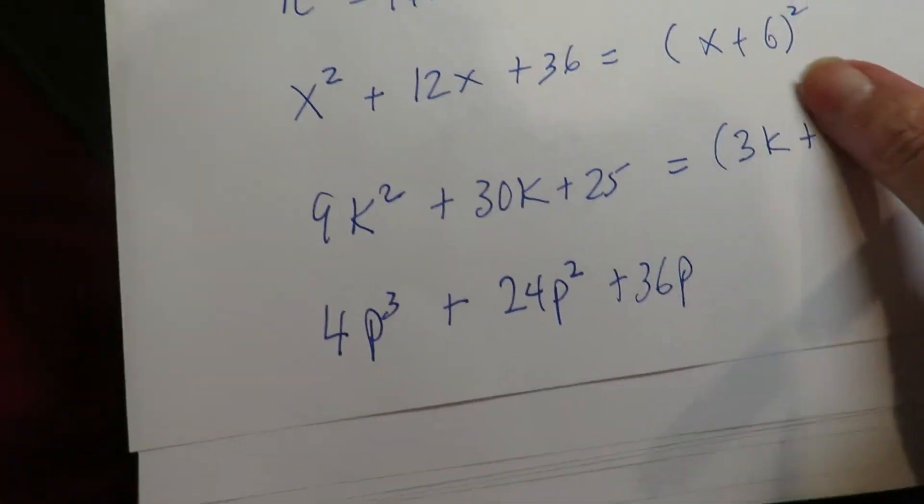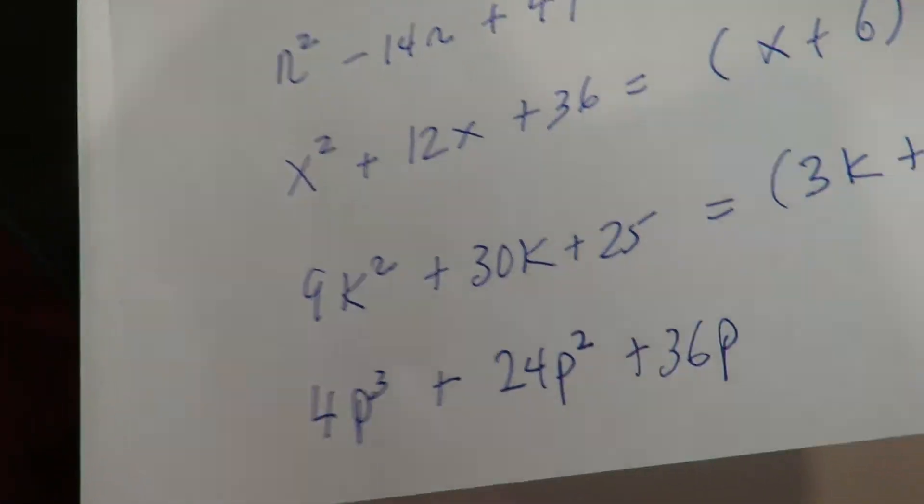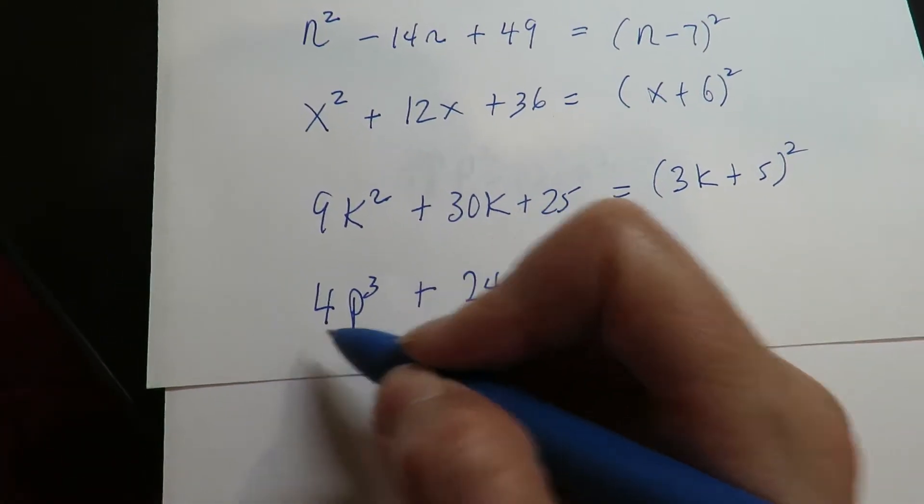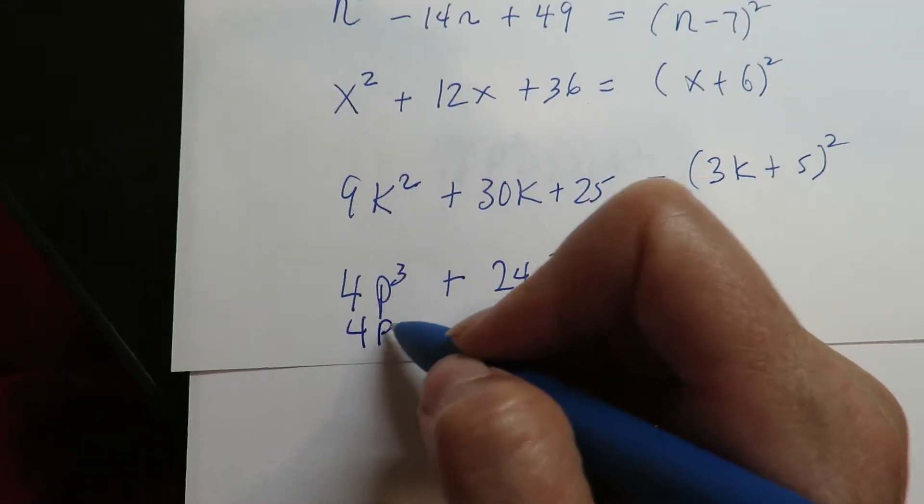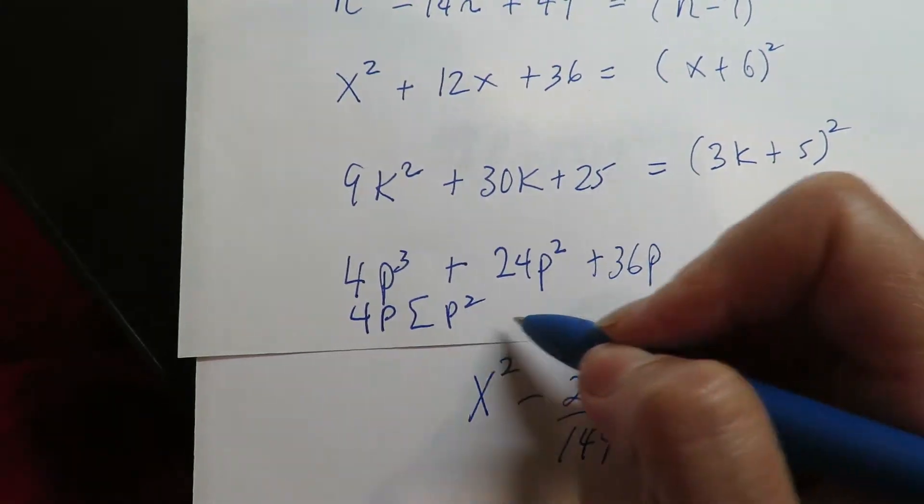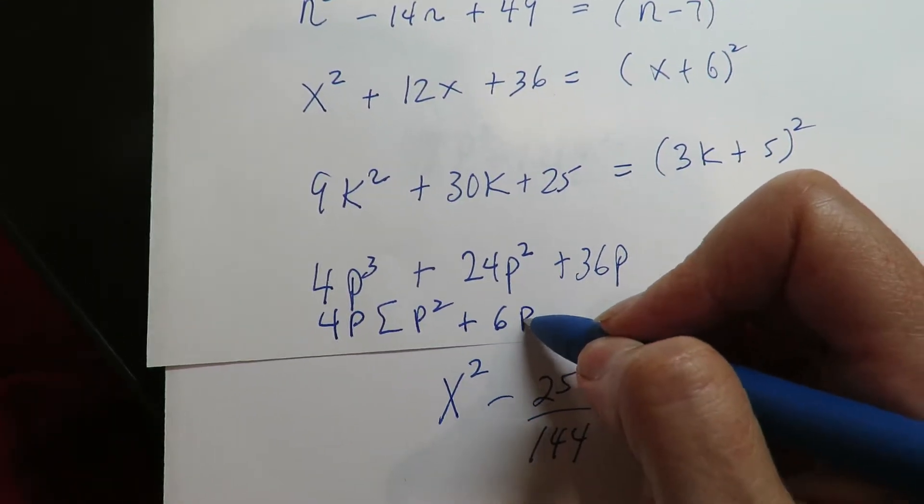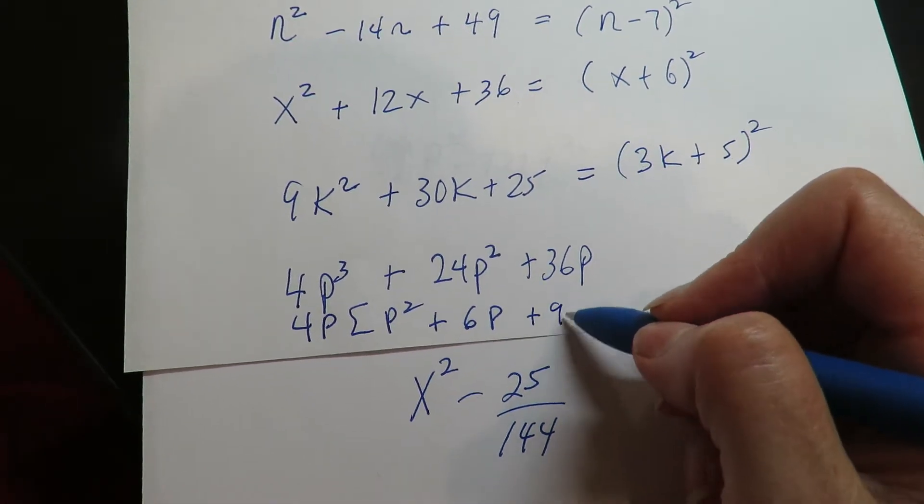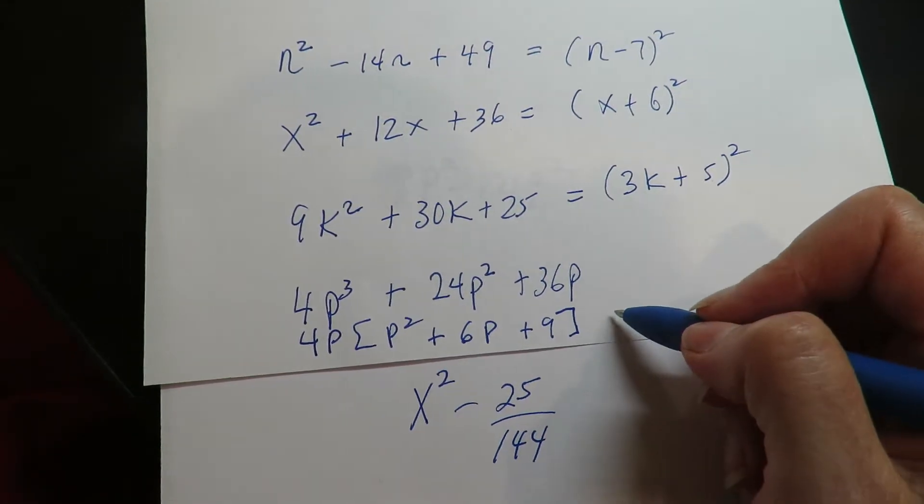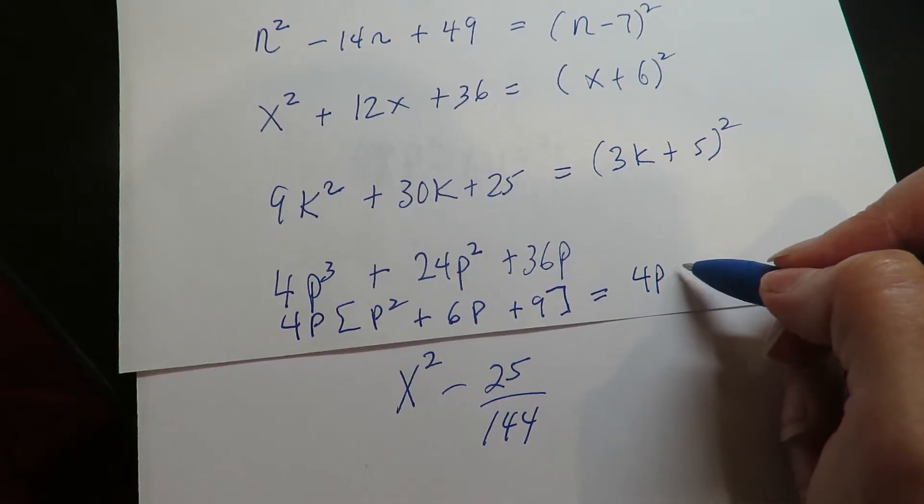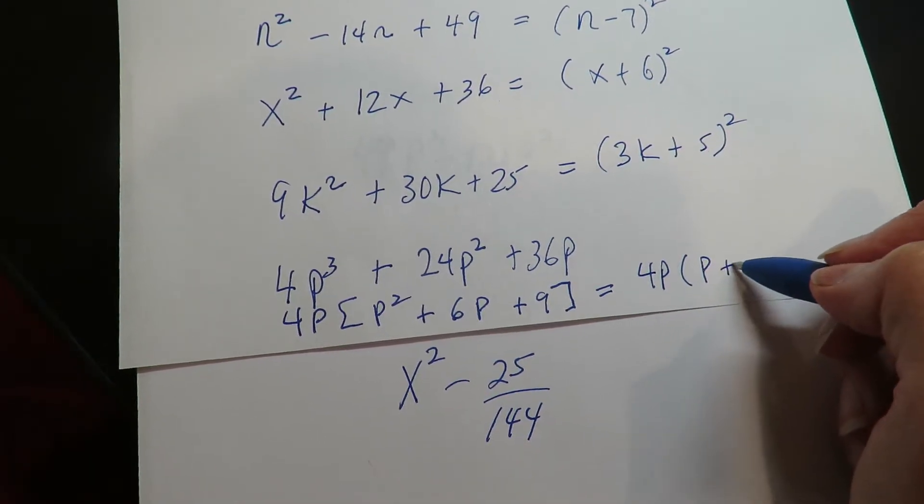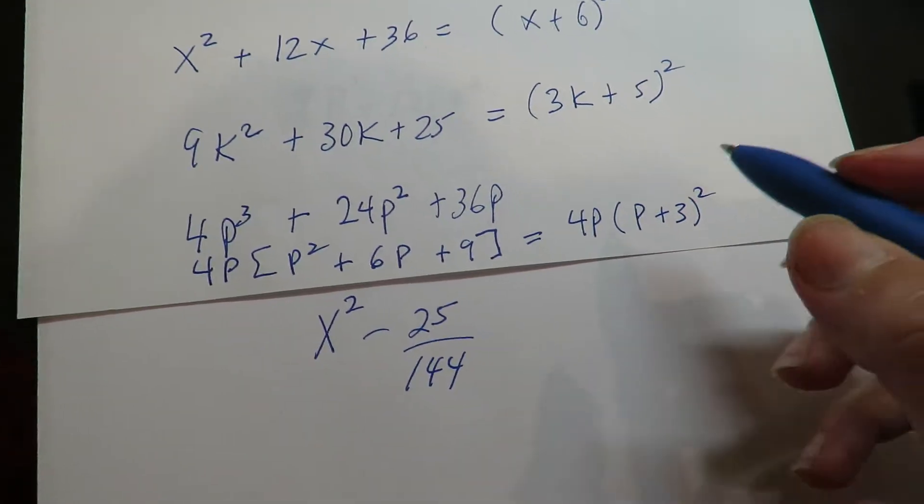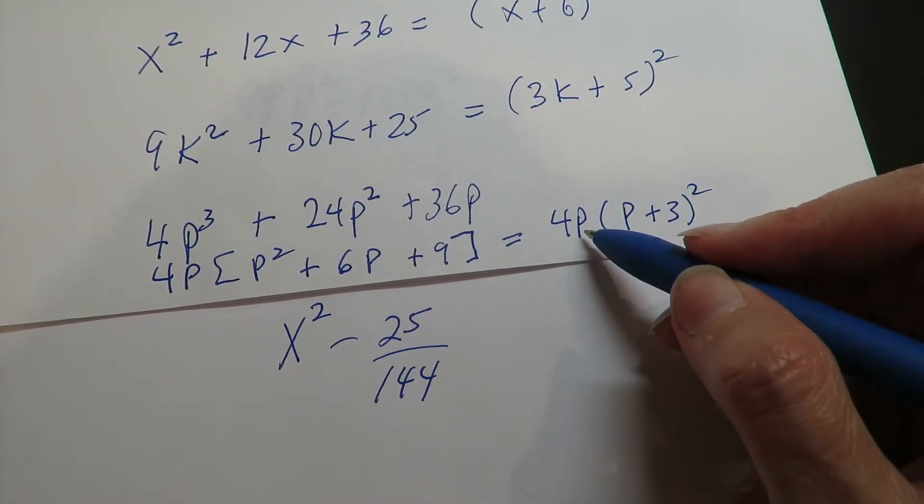And you still have the issue where you're going to have common factors mixed in with all of this. So I would take out a 4p, plus 9. And then if you have a common factor, it just hangs out in the front, okay?